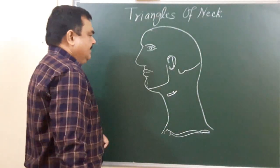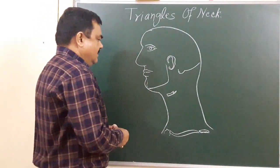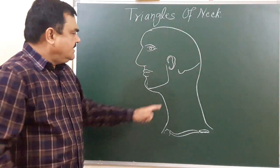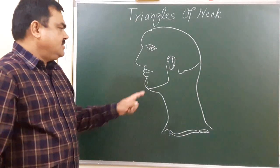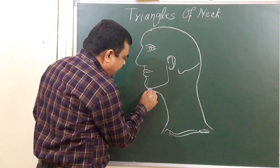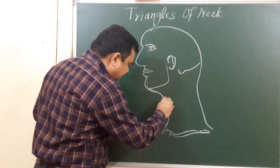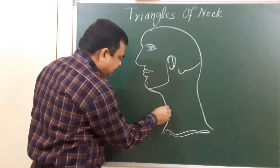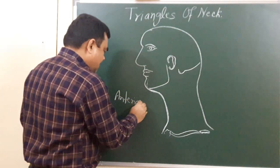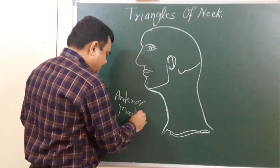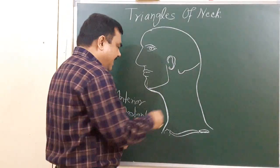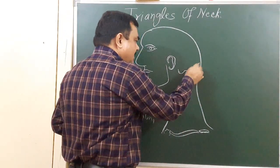This is the clavicle, this is the manubrium sterni, and here is the acromion process. If you see the boundary of the side of the neck, you will find it is bounded anteriorly by the anterior medial line.